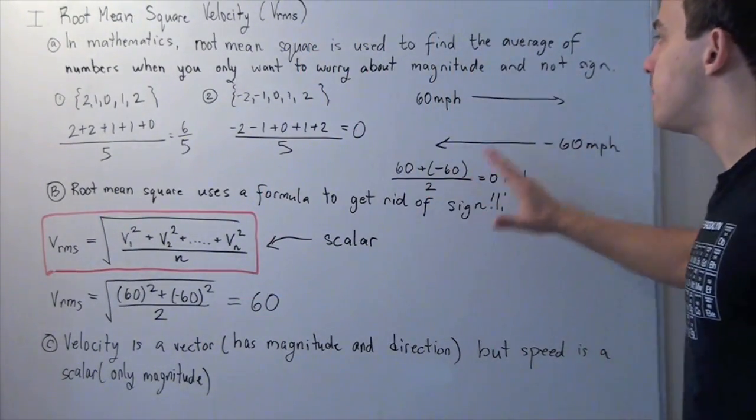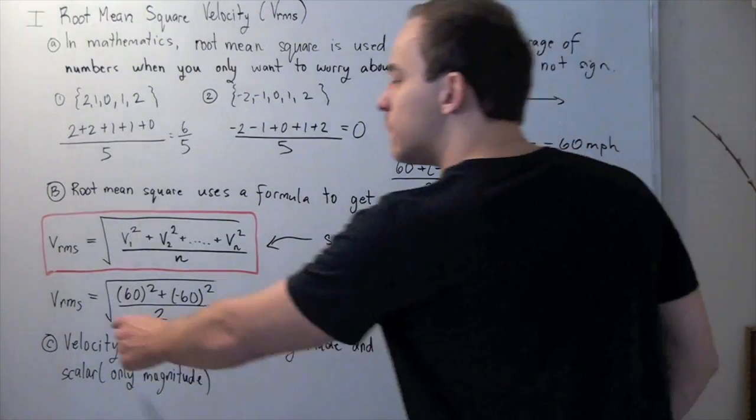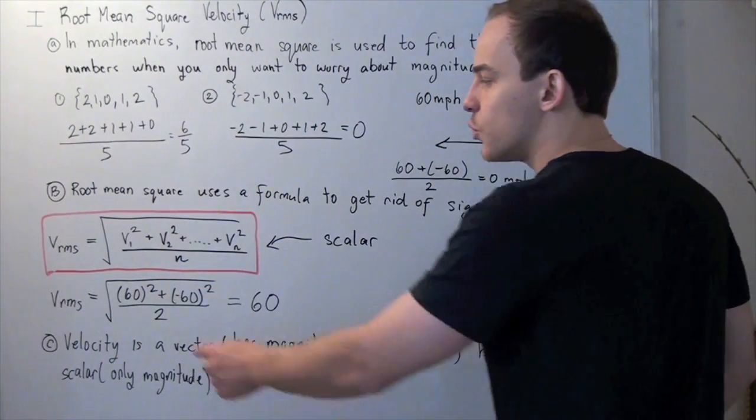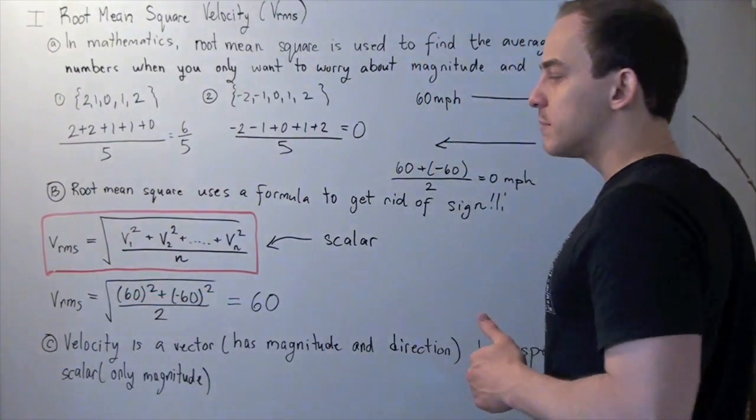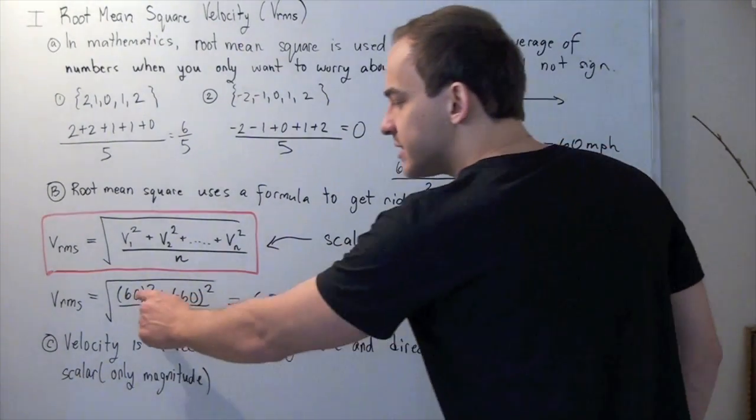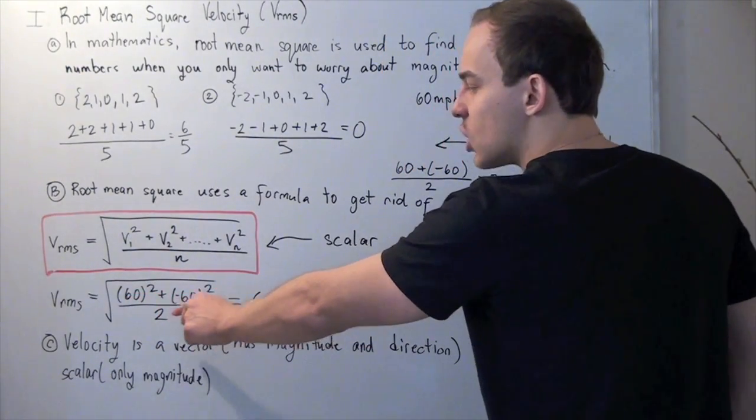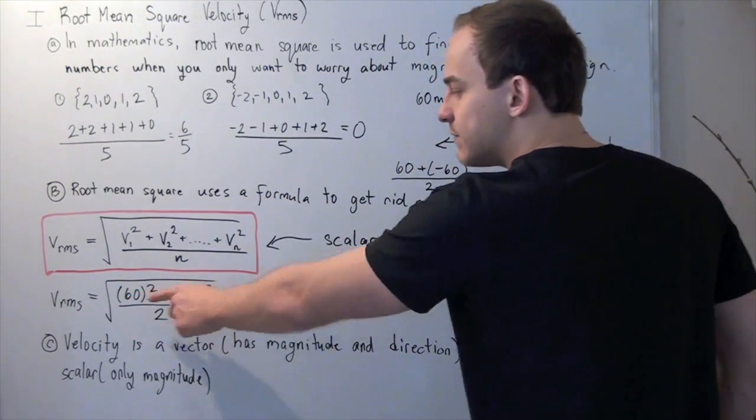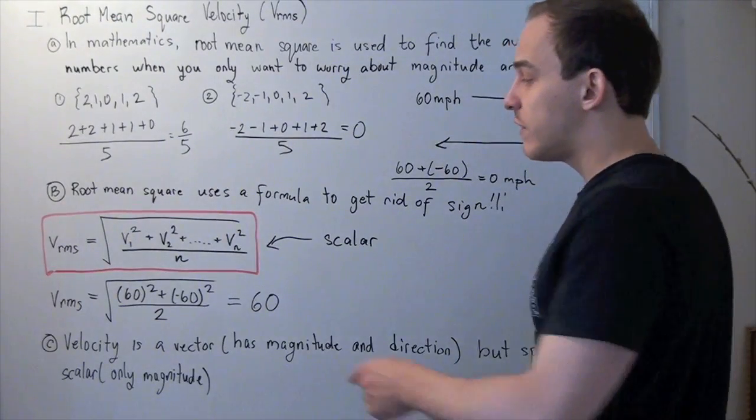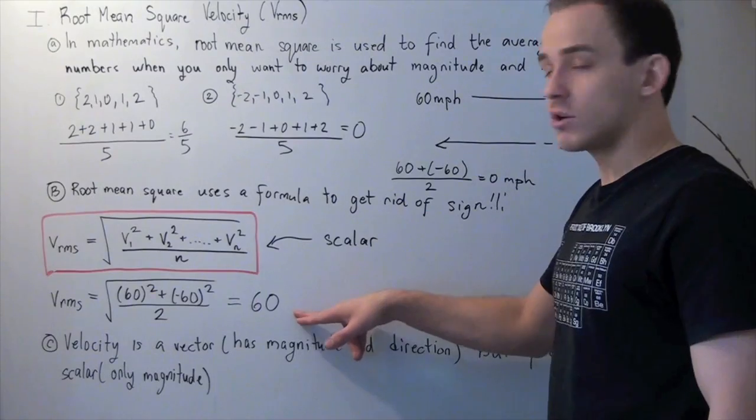So let's take this example, and let's use these two values to find our average. So V RMS is equal to 60 miles per hour squared plus negative 60 miles per hour squared. This gives you 3,600 plus negative cancel. So 3,600 gives you 7,200 divided by 2. And square root that gives you 60 miles per hour.